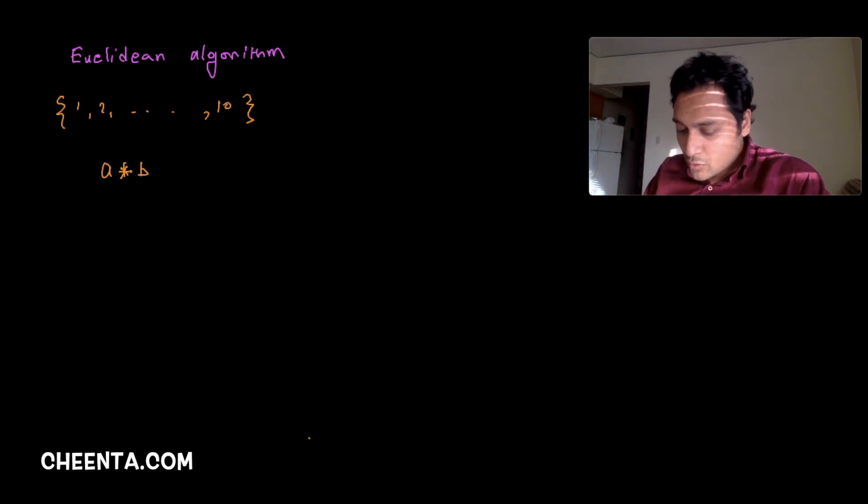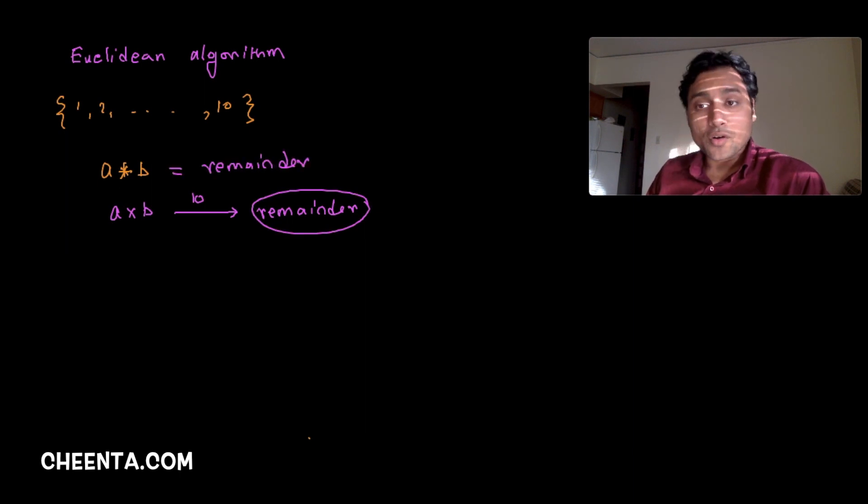How do you operate two elements of this set? What you do is you first do a normal multiplication, and then you divide that product by 10 and look at the remainder. Whatever is the remainder, that is the result of your operation of those two numbers a and b.